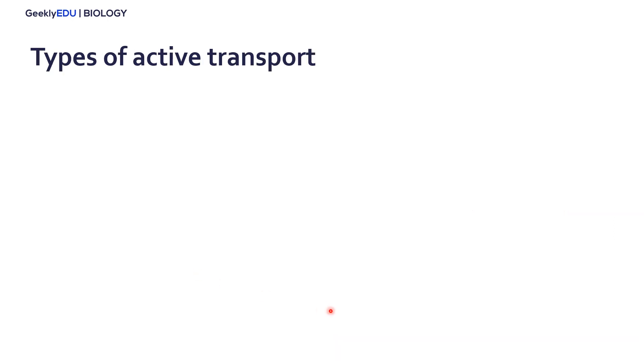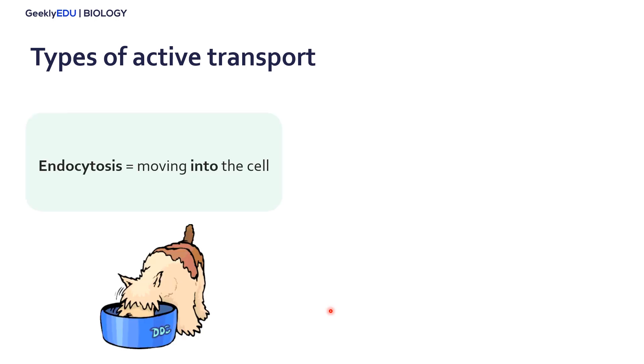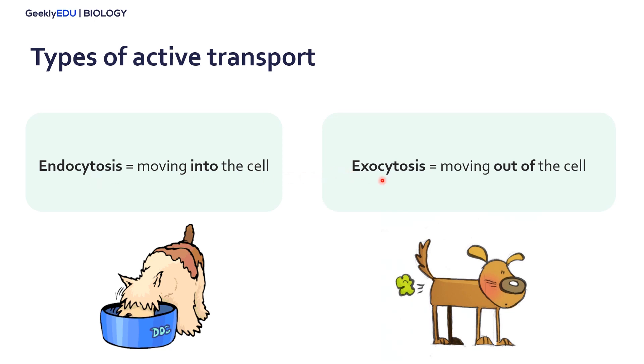Types of active transport in and out of a cell - we have two main types: endocytosis, where endo means going in and cytosis refers to a cell, and exocytosis, where molecules move out of the cell.